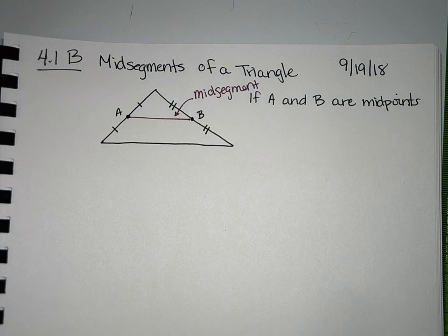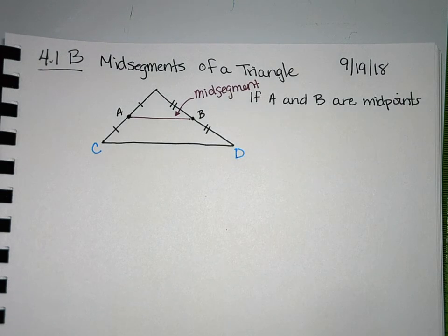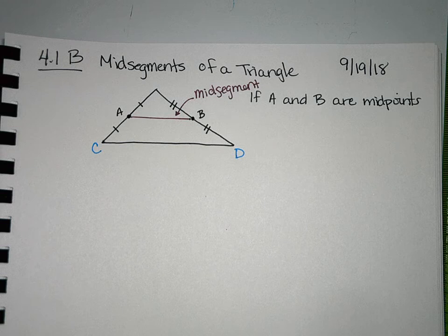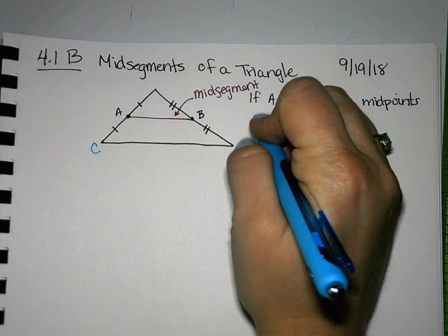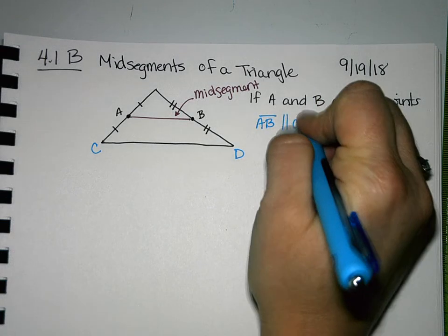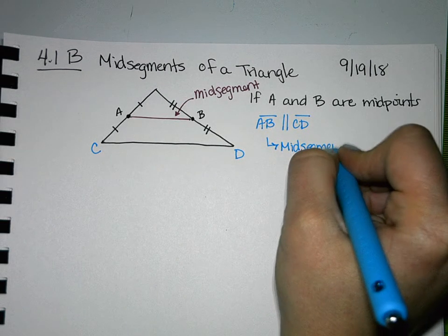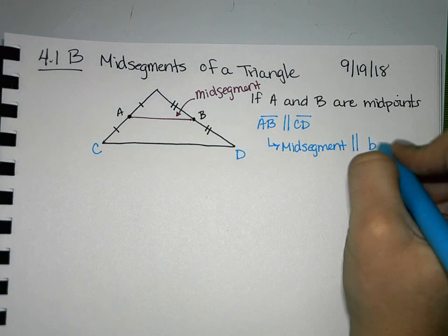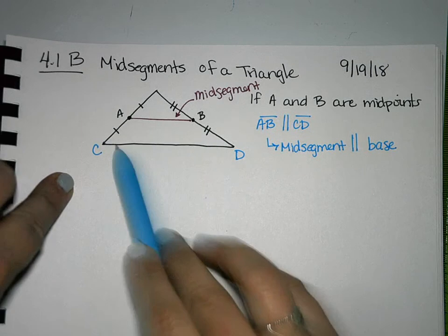So there's some special properties about a midsegment, and the main one we're going to look at today is the relationship between the midsegment and the base. So I'm going to label those endpoints C and D. So when you look at AB and CD, is there any relationship you see between them, just by looking? They're parallel.